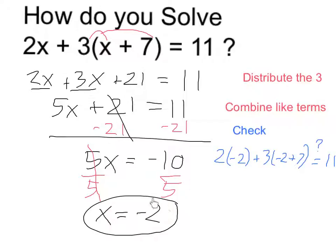Finally, I can check that this works by taking my proposed solution, x equals negative 2, and plugging it back into the original equation. And when I do so, 2 times negative 2 is negative 4. Inside my parentheses, negative 2 plus 7 is equal to 5. So this is like 3 times 5, which is positive 15, negative 4 plus 15. It's like 15 minus 4, and yes, that is equal to 11.